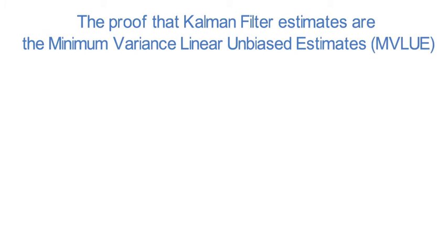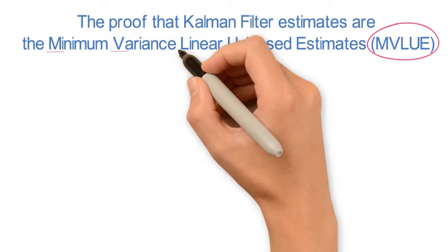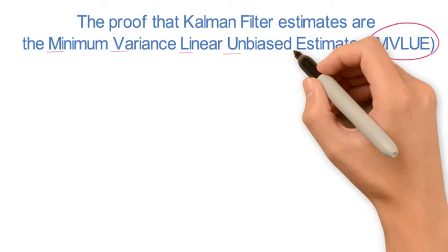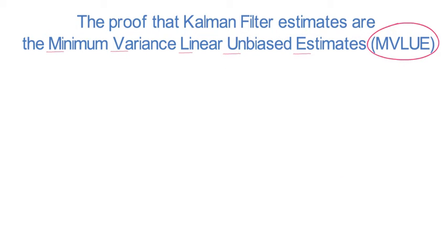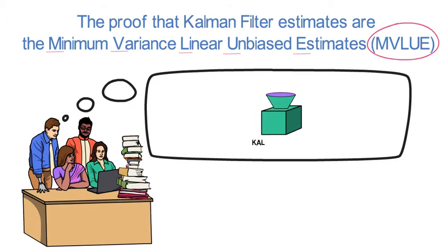This video provides the proof that Kalman filter estimates are MVLUE, meaning they are the Minimum Variance Linear Unbiased estimates. The proof is constructive and especially useful for students who want to be convinced that using the Kalman filter to filter unobserved states is indeed a good idea.